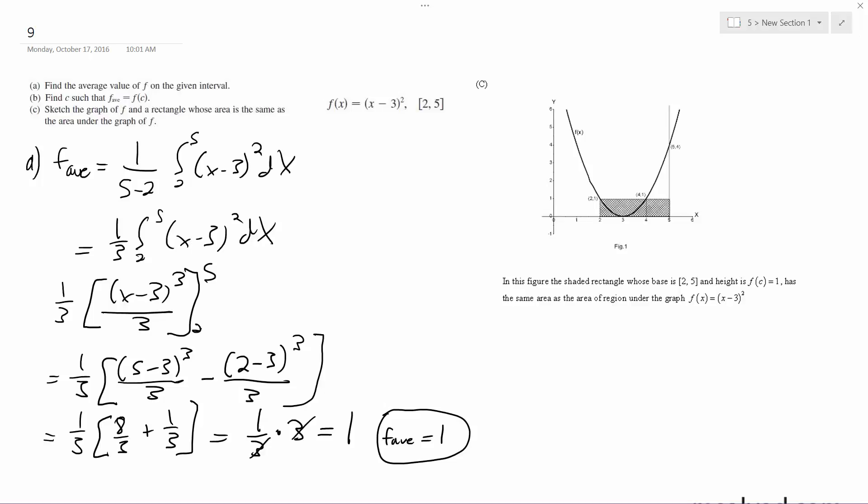All right, so that part. For c, f of c to equal the function average, we do c minus three squared is equal to one.